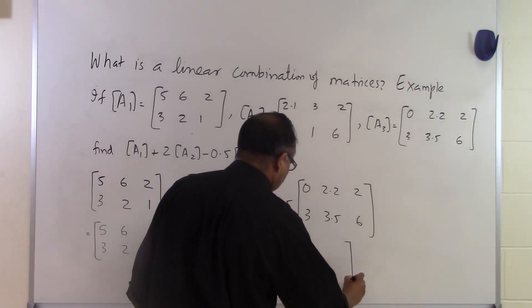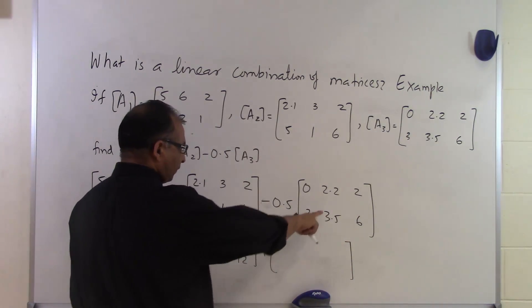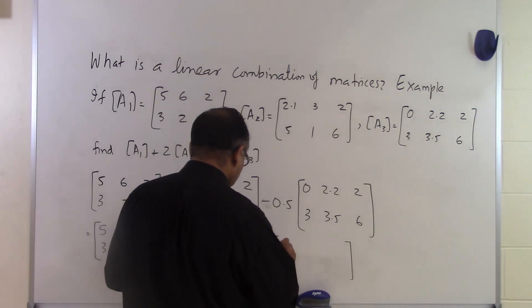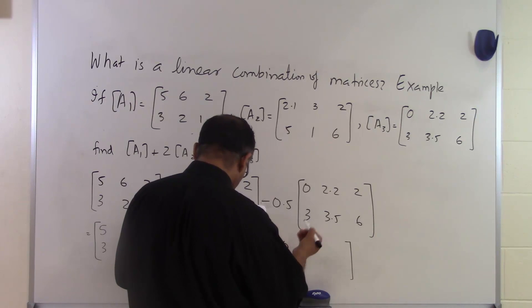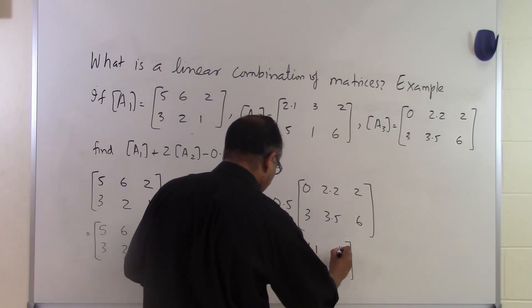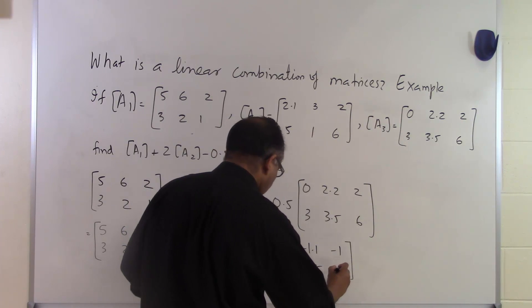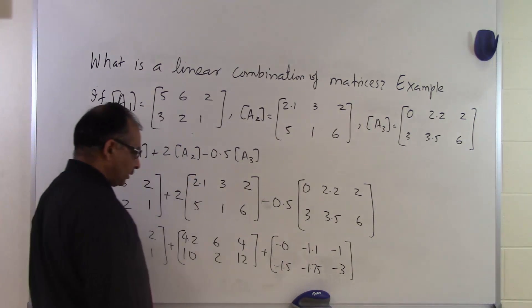And then I take minus 0.5 and I multiply it to each of those elements and I get minus 0, minus 1.1, minus 1, minus 1.5, minus 1.75, and minus 3. That's what I will get there.